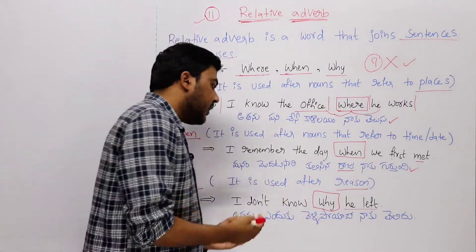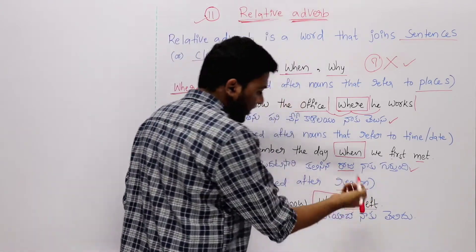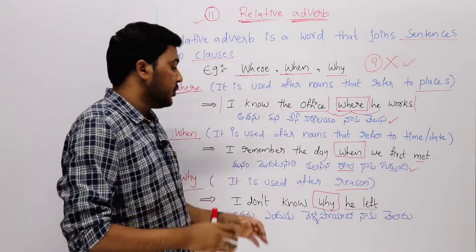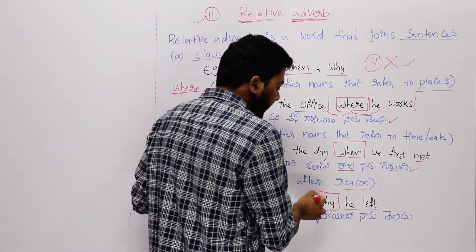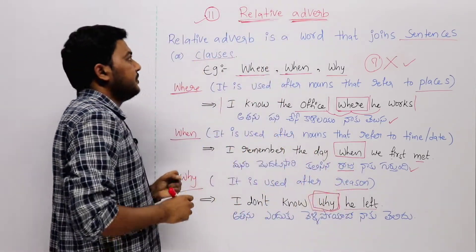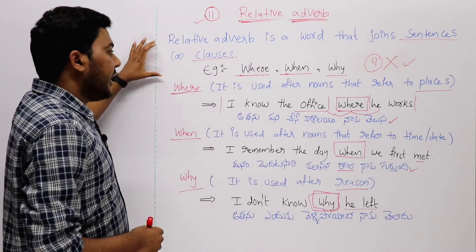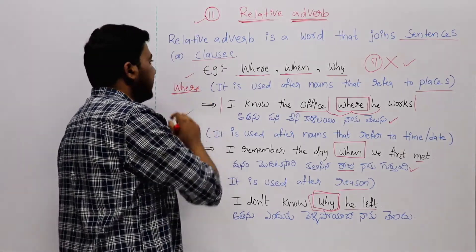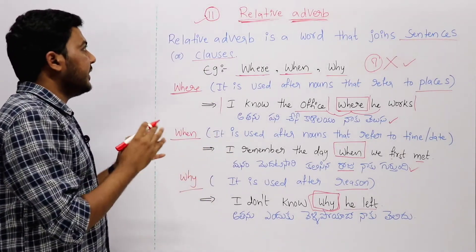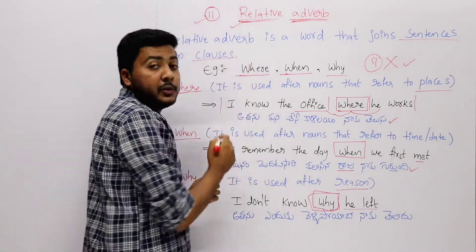Here, why expresses the reason - why he left, I don't know the reason. So when expressing reason, we use the relative adverb 'why' to connect two different clauses. This, friends, is about relative adverbs - examples and example sentences. This is complete information about relative adverbs.